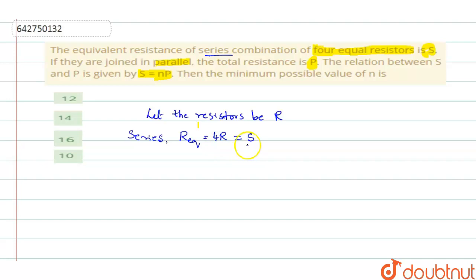let us write this value first. If 4R is equal to S, then R will be equal to how much? It is S by 4. Call this as equation 1.